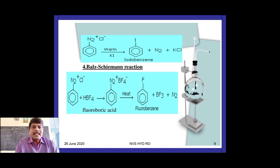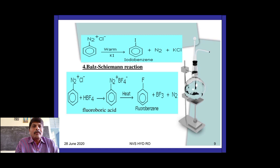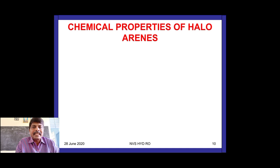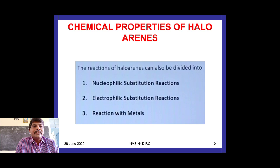To get fluorobenzene, benzene diazonium chloride is treated with fluoroboric acid; an intermediate fluoroborate is formed, and on heating fluorobenzene is obtained — this is the Balz-Schiemann reaction. Direct preparation of fluorobenzene from benzene is not possible. So the methods to prepare halo arenes are: (1) direct halogenation, (2) Sandmeyer reaction, and (3) Gattermann reaction.